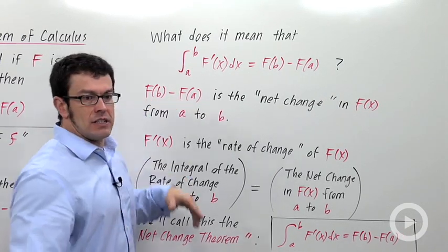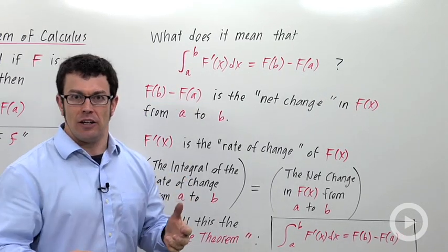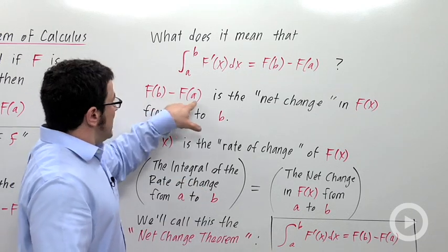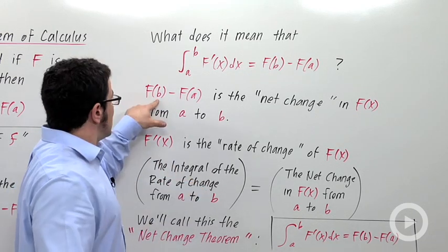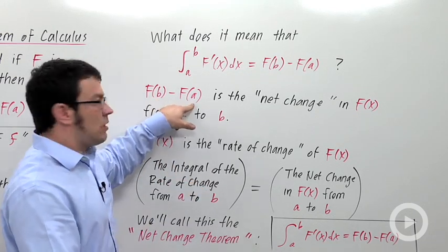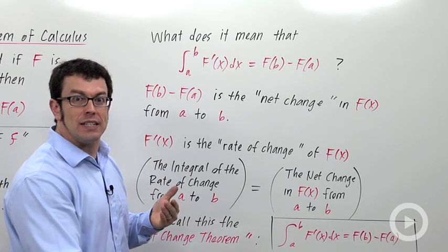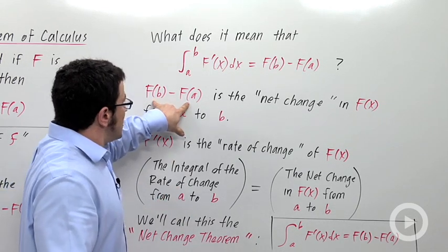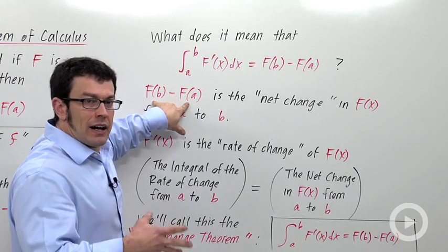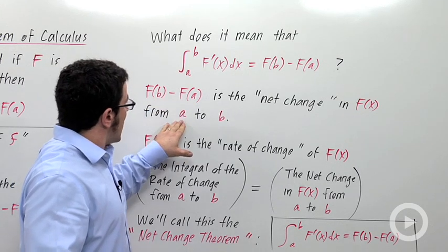So if F is some amount, like say the amount of money in your bank, a and b might be two different times. Say b is one year from now and a is now. This difference would measure how much the amount in your bank increased. So this is the net change in the amount of your bank account from time a to time b.